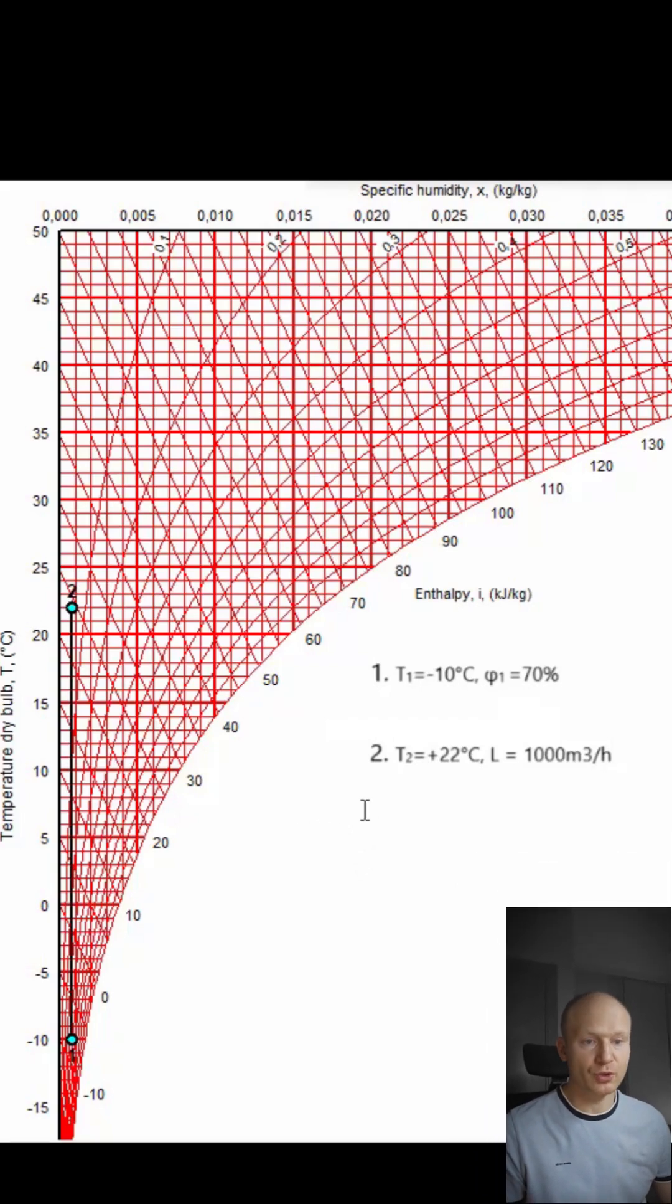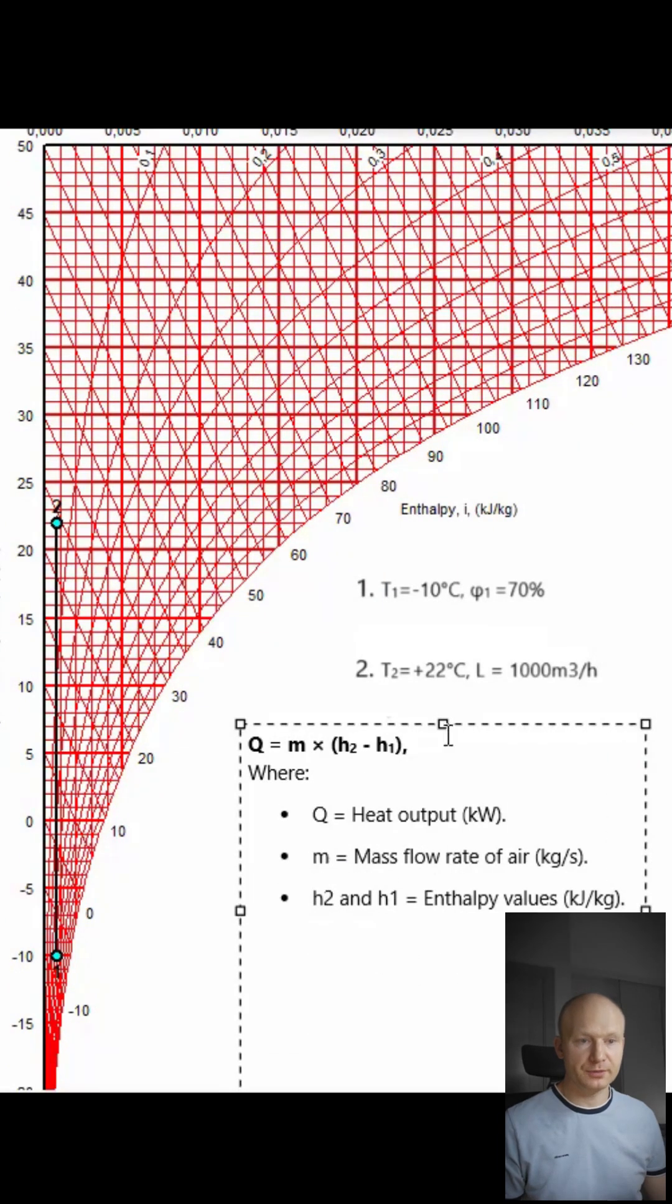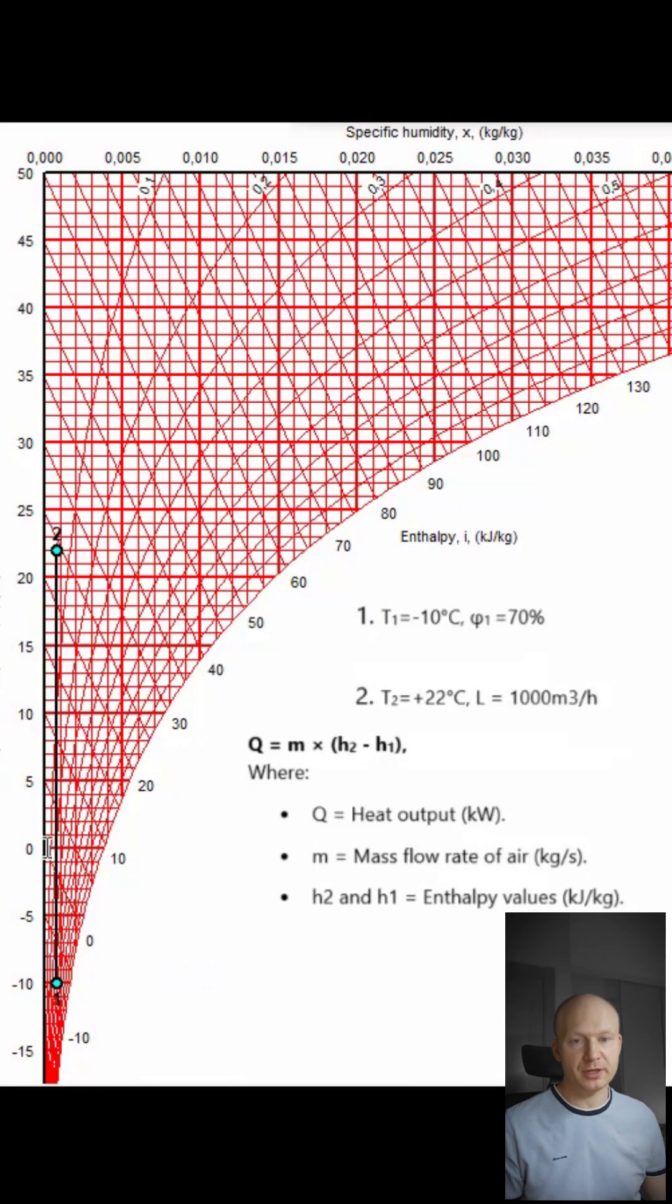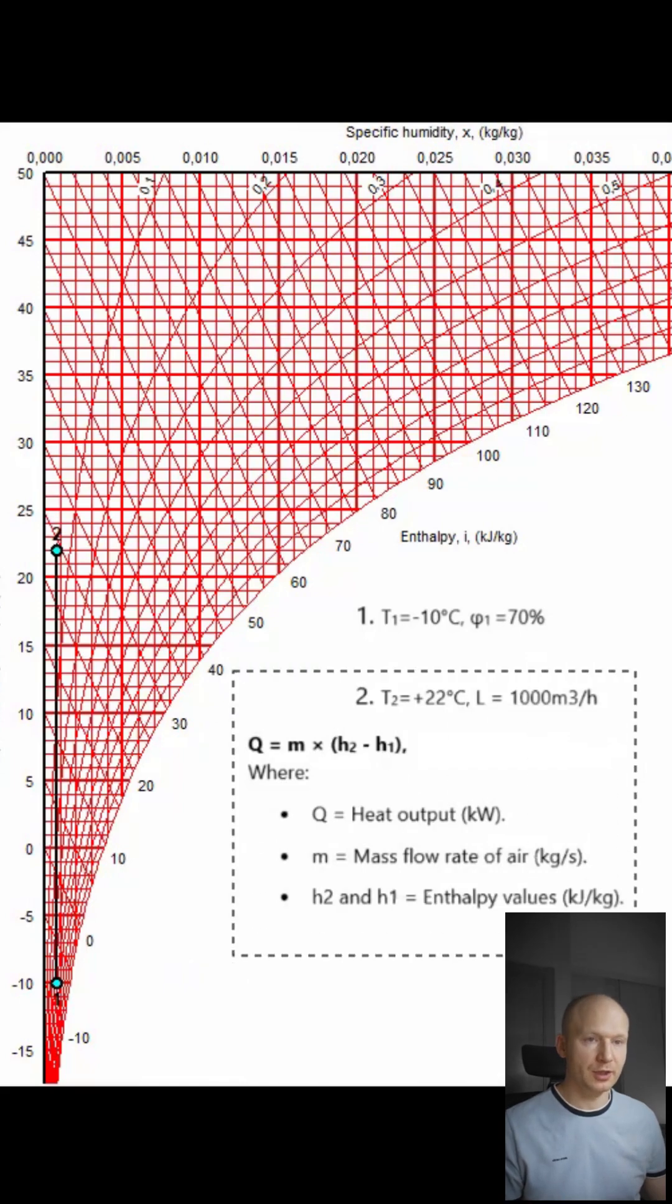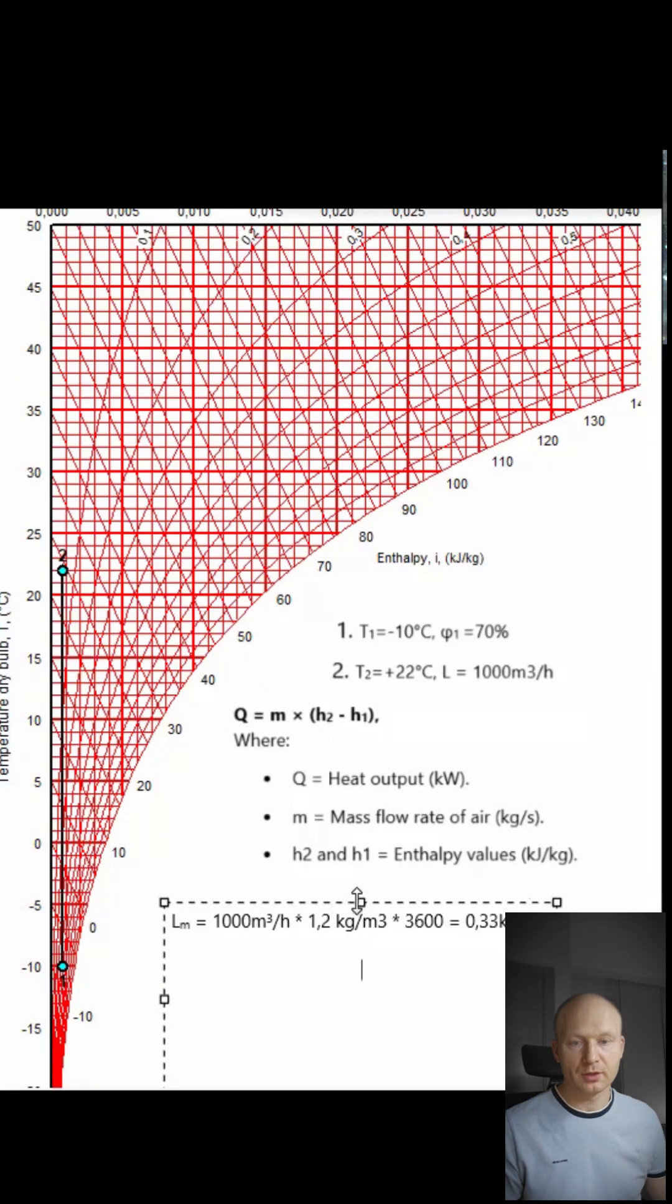The difference between the two enthalpy values is the magic ingredient. Next, apply this simple formula where Q is heat output in kilowatts, M is mass flow in kilograms per second. We'll need to transfer the volume flow to the mass flow. H1 and H2 are enthalpy at point 1 and point 2 in kilojoules per kilogram. Just plug and play.